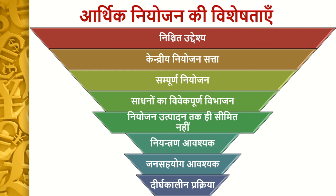What are the main components (integrants) of Arthik Niyojan? To create Arthik Niyojan, we need to define goals for 5, 10, or 2 years — without that, there is no proper planning. The doctrine of Niyojan should be of a proper type — whether it is economic, social, cultural, or related to life — all types of planning should be included.